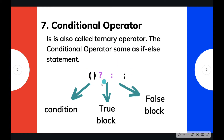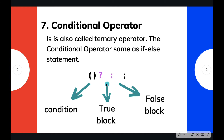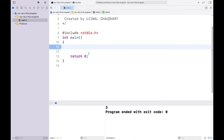The conditional operator has 3 sections and uses the question mark and colon symbols. The condition is given before the question mark. If the condition is true, the true block — between the question mark and colon — will be executed. If the condition is false, the false block — between the colon and semicolon — will be executed instead.